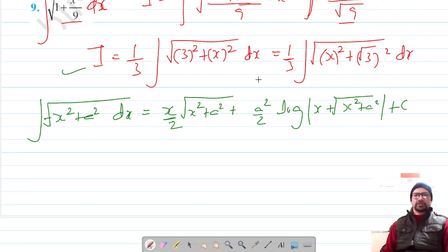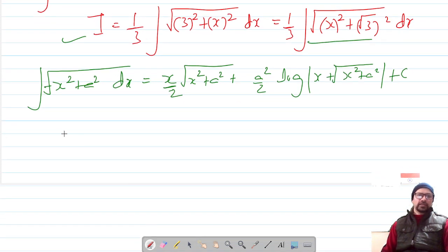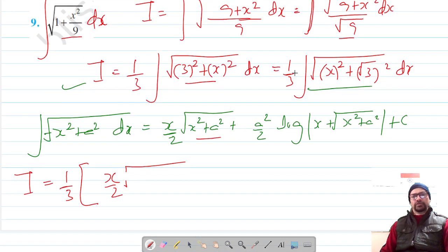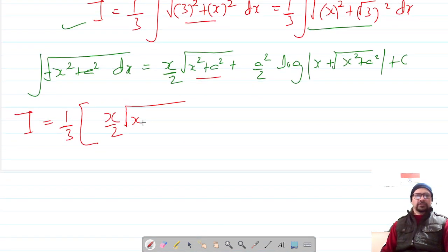And when we apply it on this formula, our integral is—so 1 by 3 is common—and x is x by 2, root of x squared plus a squared is x squared plus 9, so this is x squared plus 9.